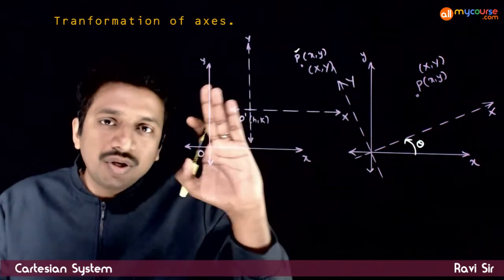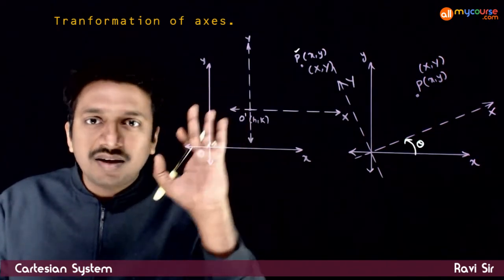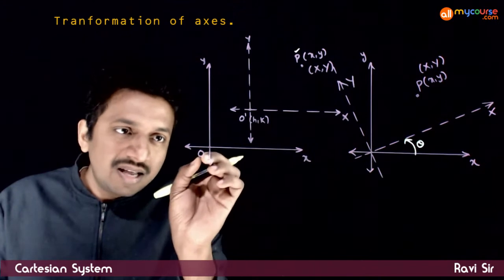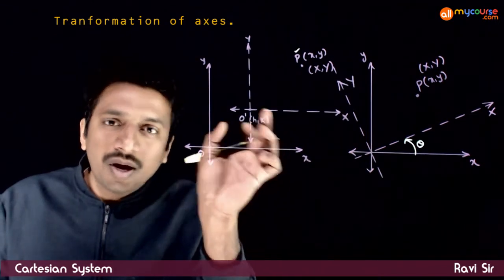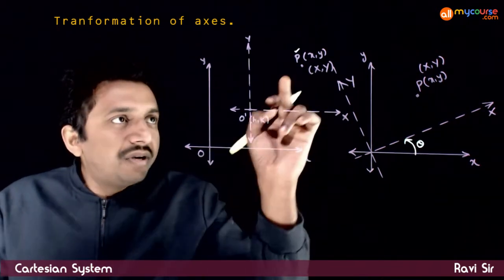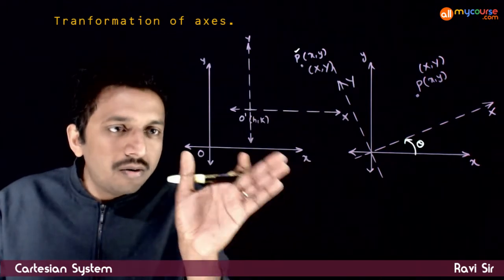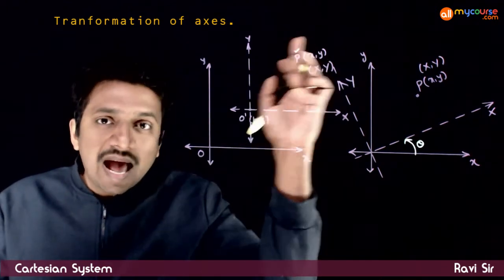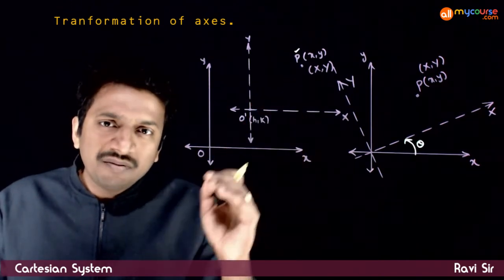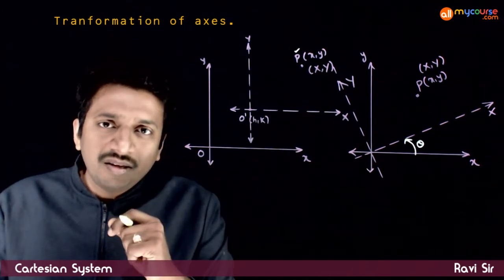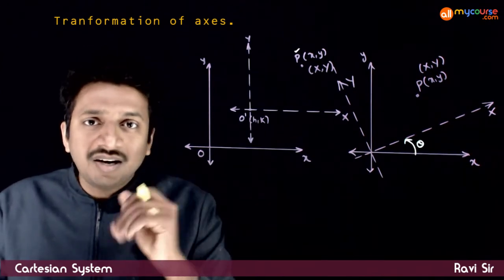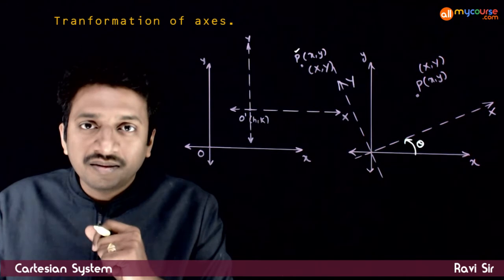For example, if you have an original coordinate system consisting of an x-axis and y-axis, without changing the direction of the x-axis and y-axis, let me shift the coordinate system to a point h, k. Let this be the new coordinate system. If you take a point P with respect to the old coordinate system, this point P has some coordinates. With respect to the new coordinate system, the same point P will have some other coordinates. What we are going to study is how the old coordinates are related to the new coordinates.